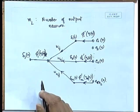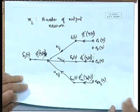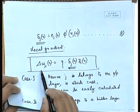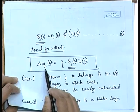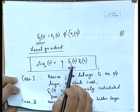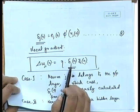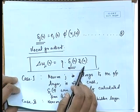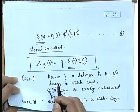Once we obtain the local gradient of the jth neuron, the weight correction is straightforward: delta_W_ji(n) = eta × delta_j(n) × Y_i(n), where delta_j(n) is the local gradient of the jth hidden neuron and Y_i(n) is the ith input to hidden layer neuron j. This completes the analysis on the back propagation algorithm.